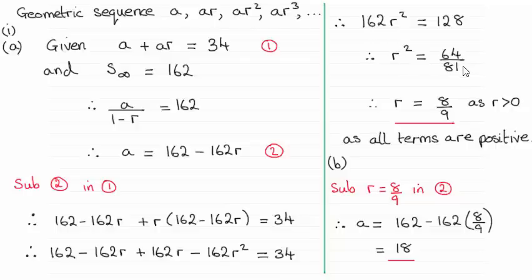Now to get r we obviously take the square root of this and it could be plus or minus 8 ninths.